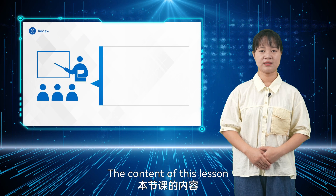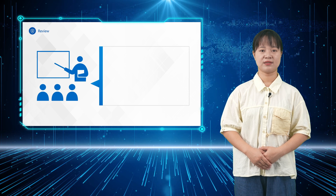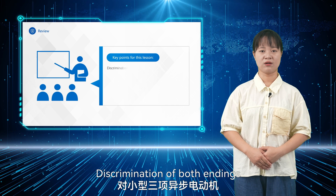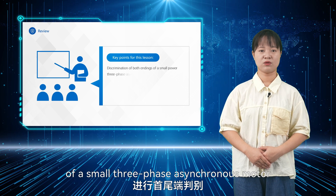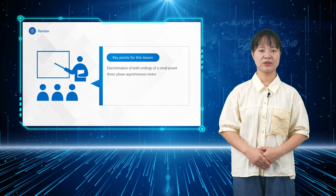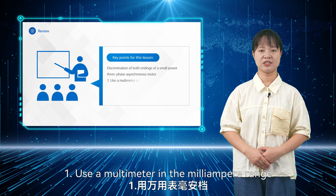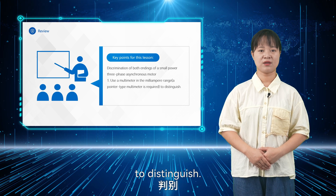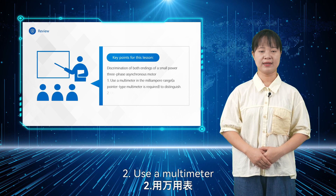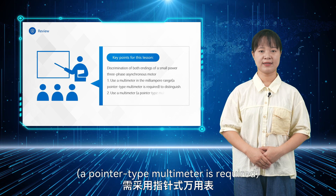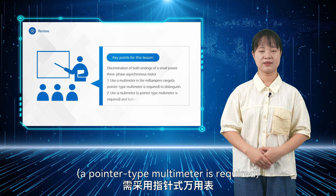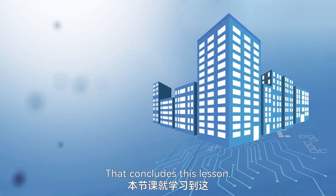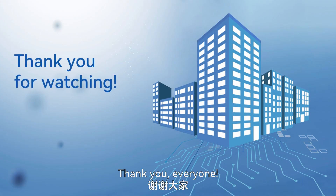The content of this lesson has been fully presented. Let's review the key points: discrimination of both endings of a small three-phase asynchronous motor. Method one: use a multimeter in the milliampere range — a pointer-type multimeter is required — to distinguish. Method two: use a multimeter — a pointer-type multimeter is required — and batteries to distinguish. That concludes this lesson. Thank you, everyone.